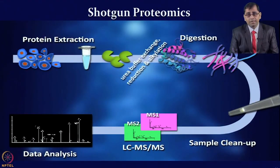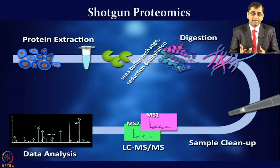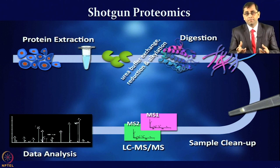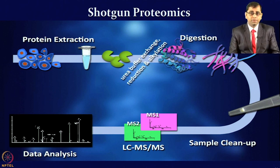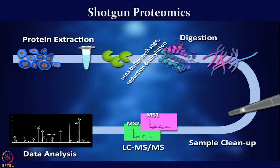Then comes the field of shotgun proteomics, which is essentially driven by mass spectrometry. You take the complex protein sample, make lysates, digest them using an enzyme like trypsin, perform reduction, alkylation and digestion, followed by cleanup of the peptides. From complex proteins you have now made peptides which are cleaned up. These peptides can then be separated using mass spectrometers for MS or MS/MS analysis, which provides peptide sequences and protein information using different database searches.